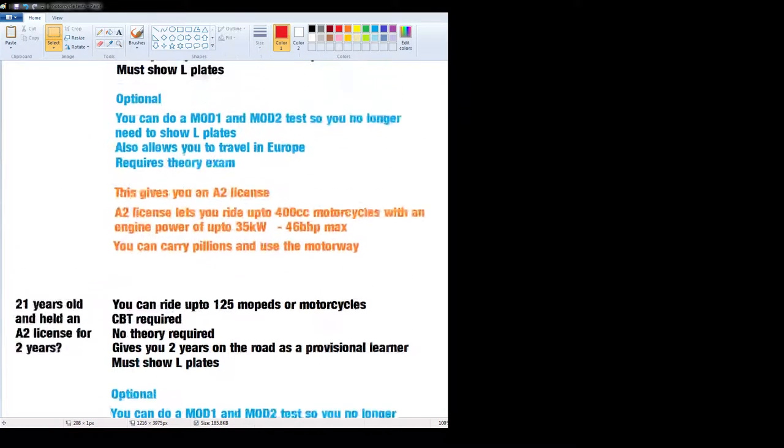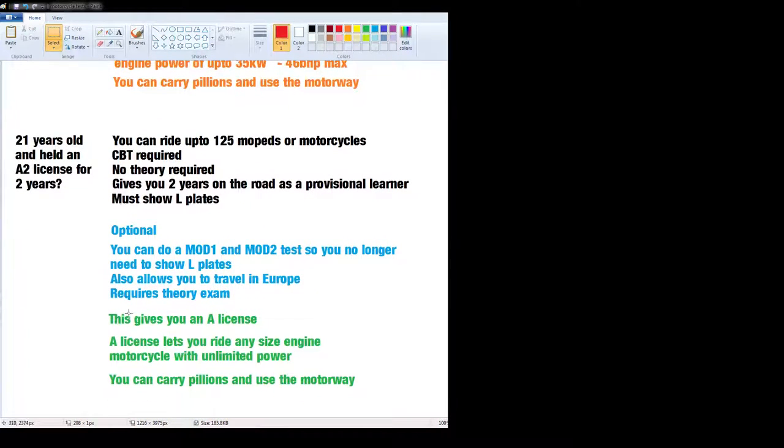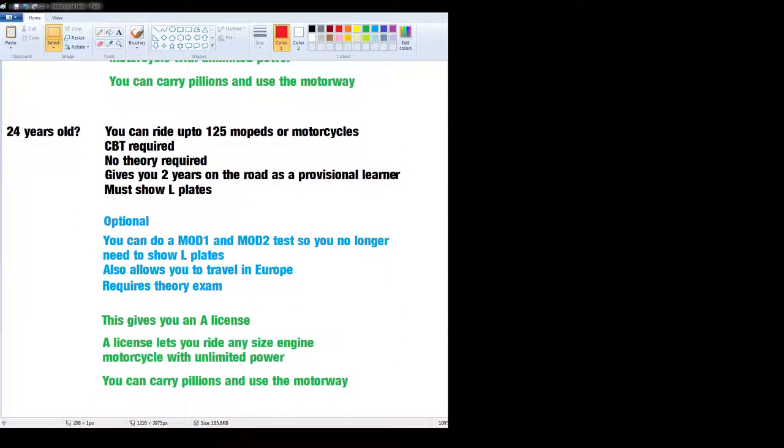If you haven't got your A2 license, let's say you were on your CBT for a year when you were 19 and you decided to do Mod 1 and Mod 2 tests and get your A2 license and you're 20, you then have to wait two years. So you'd have to wait two years for you to then get your full license. If you're patient, like I was, you can just wait till you're 24. You can literally wait till you're 24 and you can do what's called a direct access course. You do your Mod 1, you do your Mod 2, you do your theory and there you go, you've got an A license.